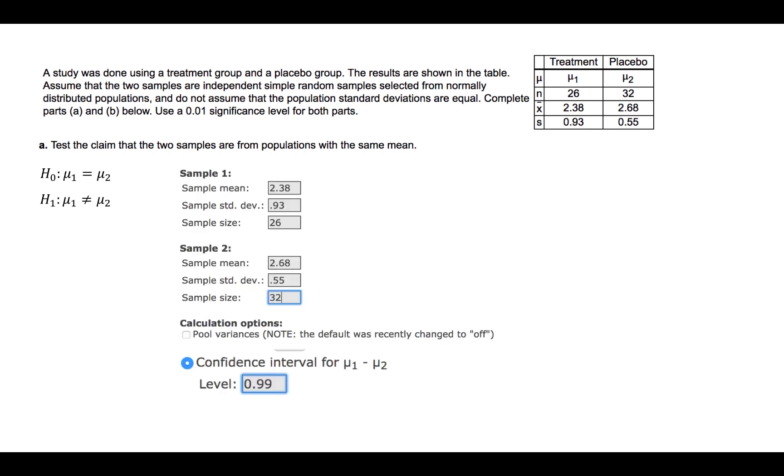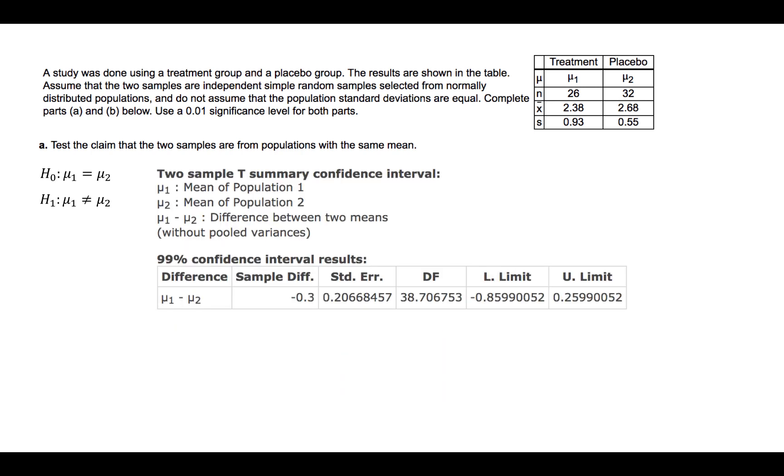We will go back to where we input our values, and this time select confidence interval for mu1 minus mu2. Since this is a two-tailed test, our confidence level would be 1 minus our significance level, or in other words, 0.99. This gives us interval endpoints of minus 0.860 to 0.260 if we round to three decimal places as required.